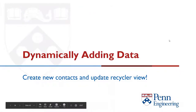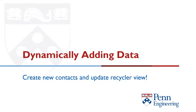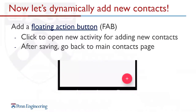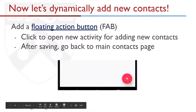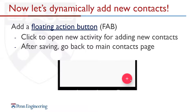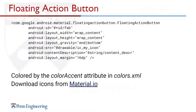Now we want to dynamically add contacts and update RecyclerView. We'll add a Floating Action Button (FAB) — a button with a shadow that you can customize. When clicked, it should open a new activity with a form for adding new contacts. After clicking save on that form, we go back to the main contacts page. The FAB's color is set by the colorAccent attribute in colors.xml, and you need to add a dependency for it. You can also set a custom icon using src pointing to a drawable or mipmap resource.